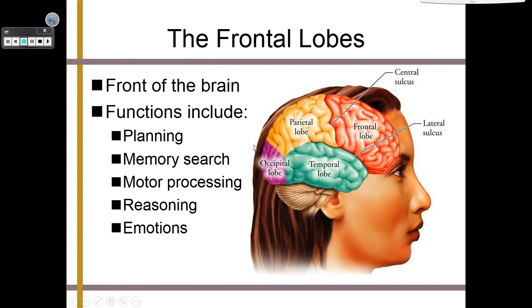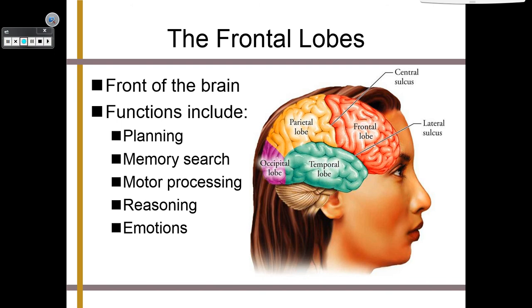The frontal lobes are in the front and up top. They are responsible for a ton of things: planning, searching through memory, motor processing, the ability to reason or solve hard problems, and emotions. Your frontal lobes are where your personality resides — who you are as a person, all your different aspects of individuality, is focused mainly in your frontal lobe.